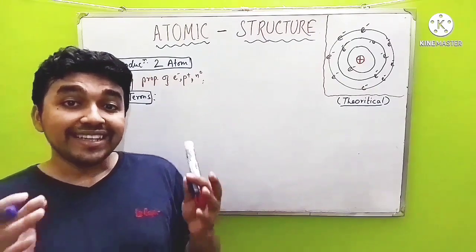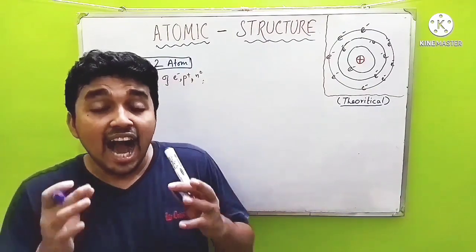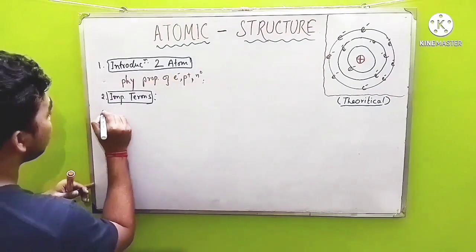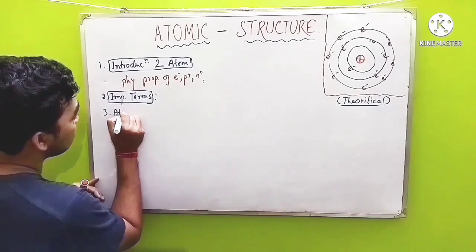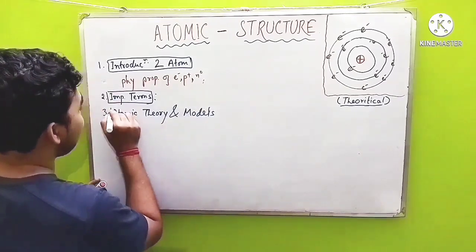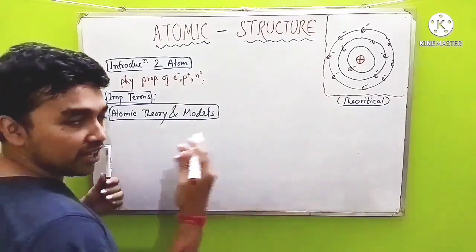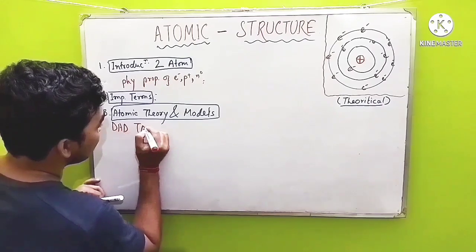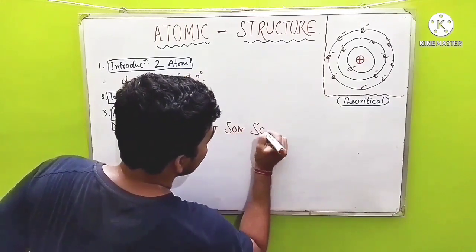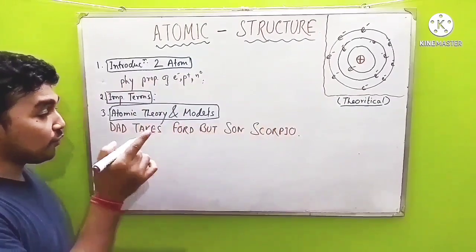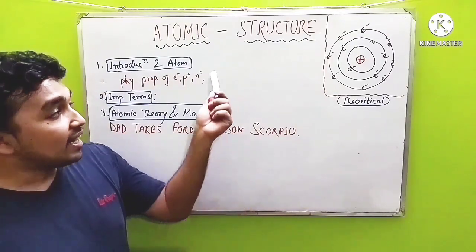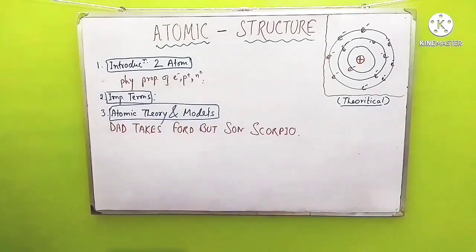After that, we will come to the different atomic theories and atomic models — how the structure of an atom gradually developed to today's ultra-modern structure. We will read in the third lecture about atomic theories and models. Here, you will get to know a famous mnemonic of mine. If you want to know about this mnemonic, you must go through this lecture and it will be firmly in your grip.